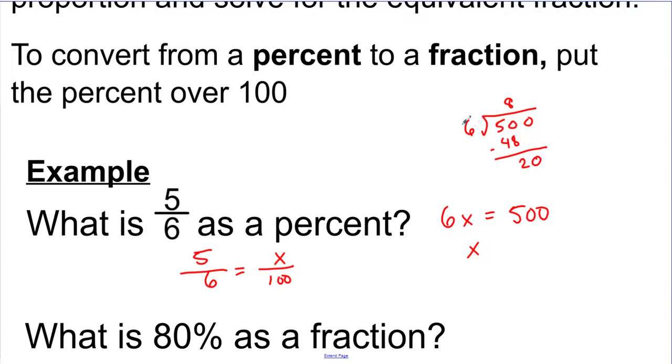We're going to bring down our 0. 6 goes into 20 three whole times, that would be 18. We're going to get our repeating 2s happening here. So I'd get a 20 again, it's 0.33 repeating. We're going to say 5 sixths as a percent is 83.3%. That is the percent out of 100 for 5 sixths.